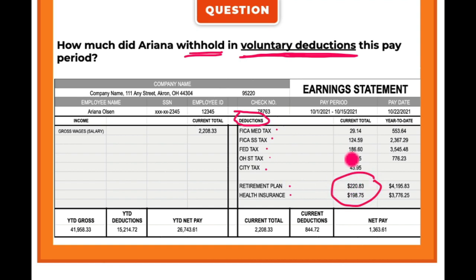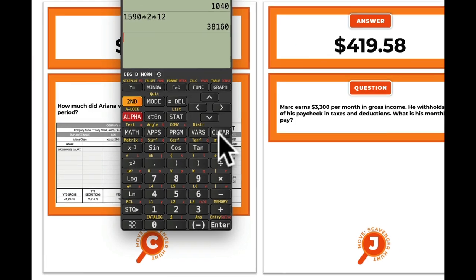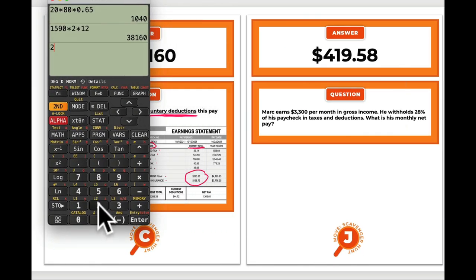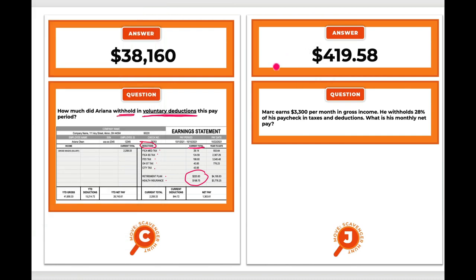For this pay period we look at the current total column — not year to date. I have $220.83 plus $198.75. Adding those two numbers: $220.83 + $198.75 = $419.58, which is the answer to this card. It's a scavenger hunt — you walk over from card C and go find card J.